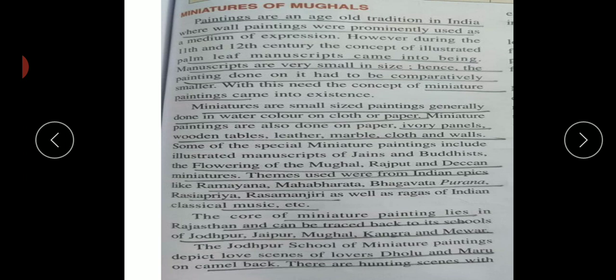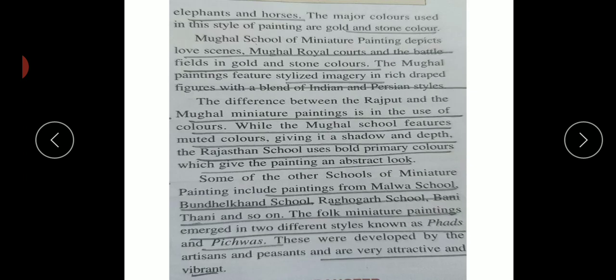Some special miniatures of the time illustrated about the Jains and Buddhists, and there were flourishing Mughal, Rajput and Deccan miniatures. These themes covered Indian epics like the Ramayana and Mahabharata, the Bhagavad Gita, Puranas, Rasikapriya, and classical music themes. The core of miniature painting was that of Rajasthan, followed by the Jodhpur school. These paintings were very stylish, imaginary, and richly draped - blending Indian and Persian styles.